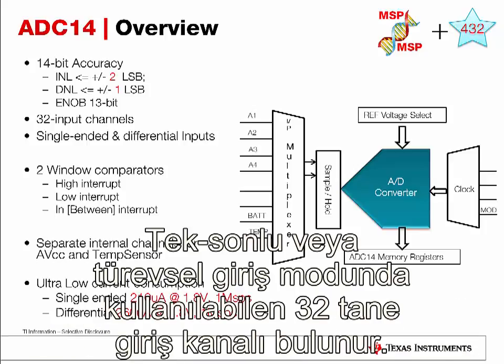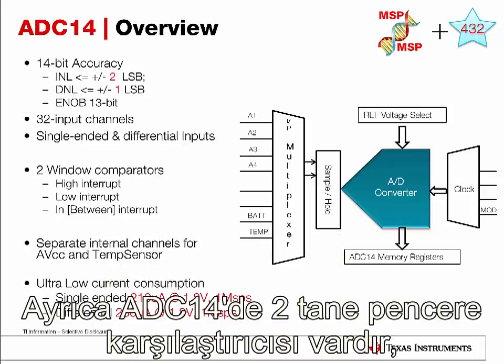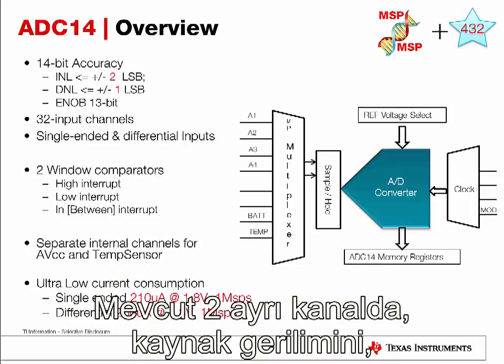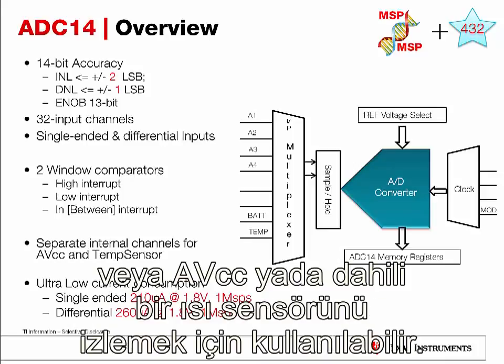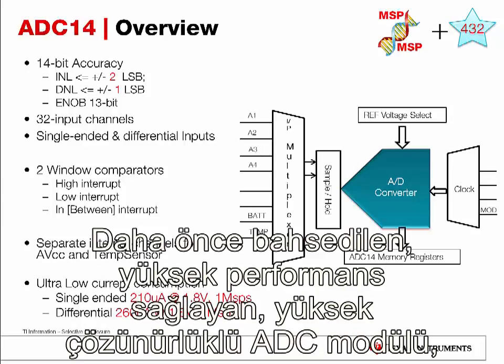There are 32 input channels, which can be used in either single-ended or differential input modes. The ADC14 also includes two window comparators. There are two separate internal channels that can be used to monitor the supply voltage, or AVCC, as well as an internal temperature sensor.